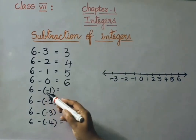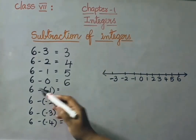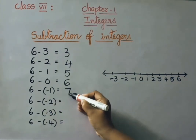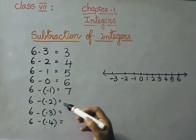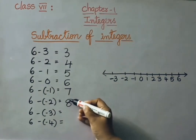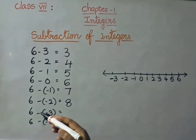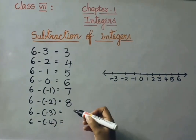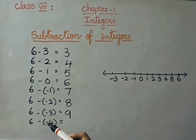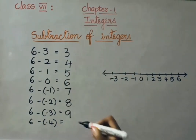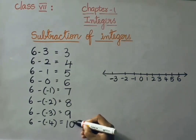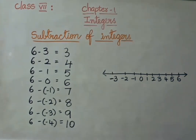6 minus of minus 1 — that means 6 plus 1, answer is 7. 6 minus of minus 2 — that means 6 plus 2, that is 8. 6 minus of minus 3 — that is 6 plus 3, answer is 9. Next, 6 minus of minus 4 — that means 6 plus 4, so the answer is 10.